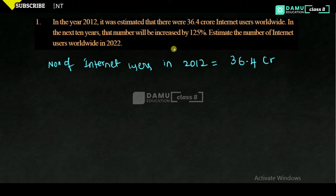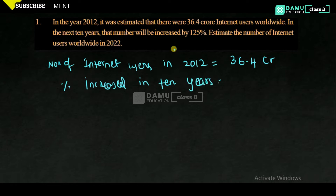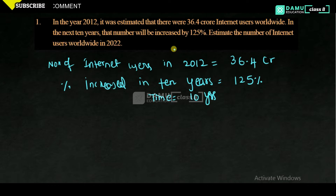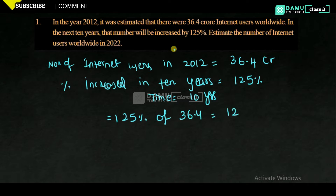The percentage increased in the next 10 years will be equal to 125 percentage. So we need to estimate the number of internet users after 10 years. The number of internet users increased is 125 percentage of 36.4 crore. Of means multiplication, so 125 by 100, converting percentage to value, into 36.4.